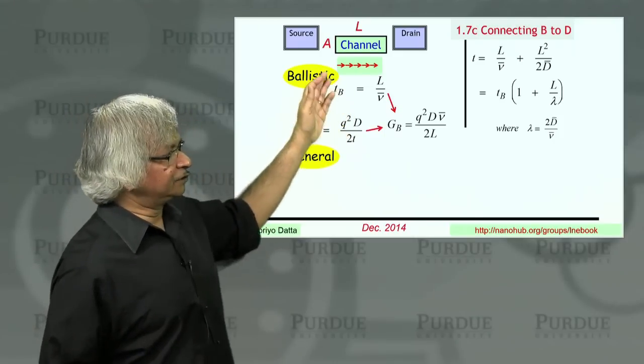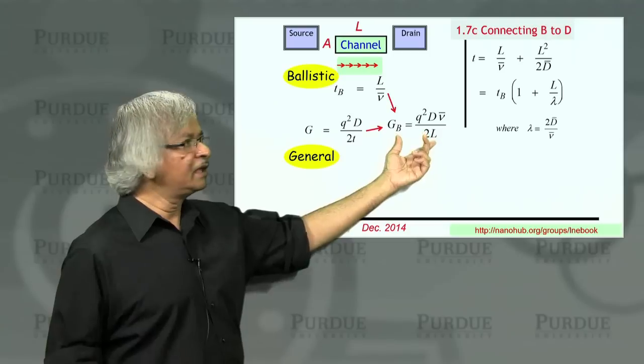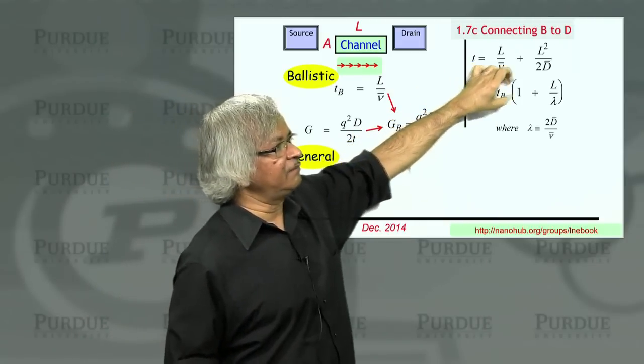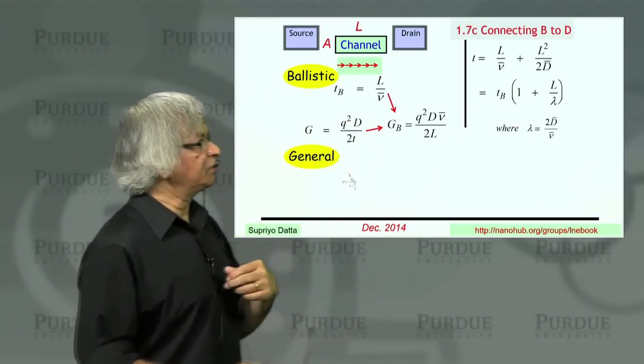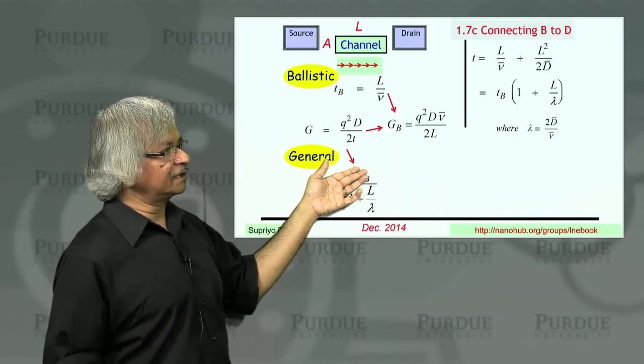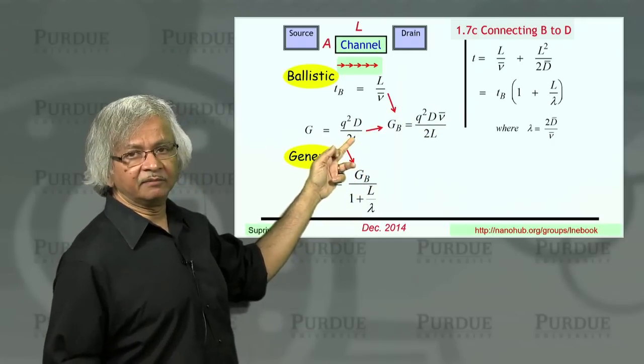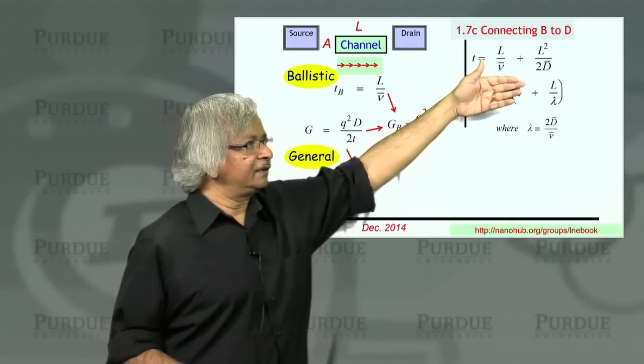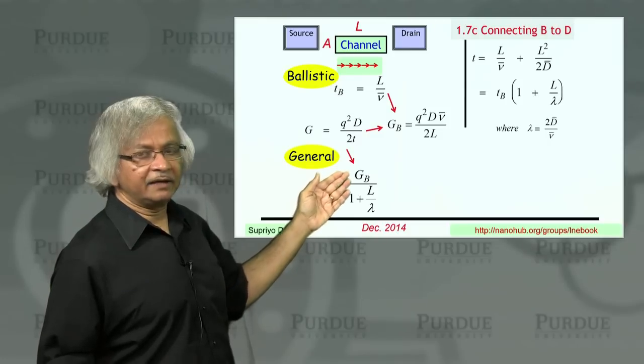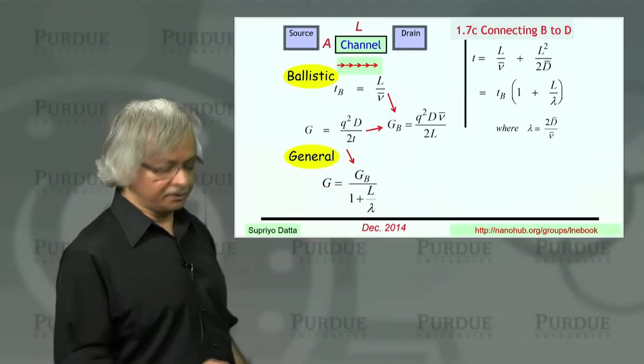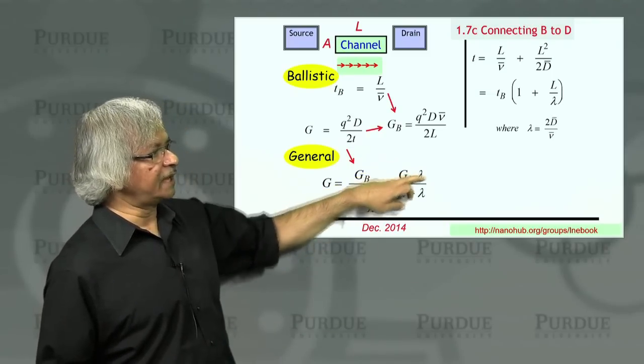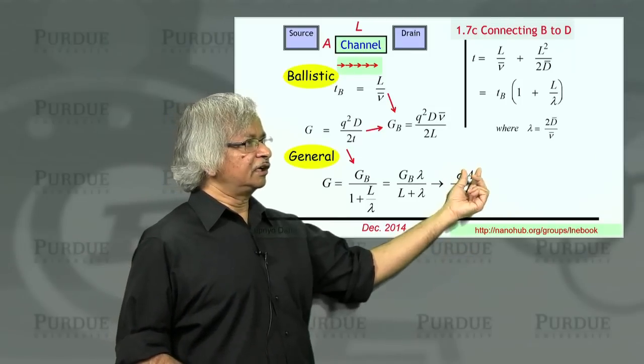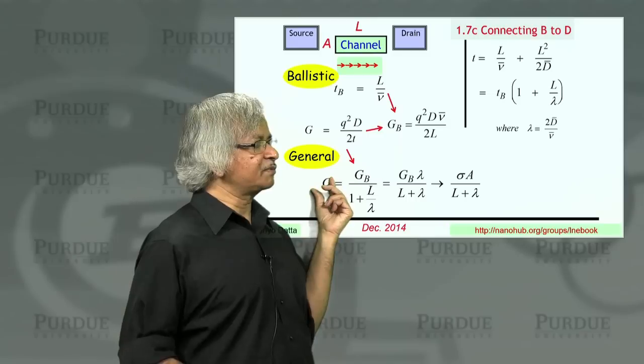So if you now combine that, for ballistic case, we had an expression for ballistic conductance that we obtained before by putting the ballistic time for T. But now let's use this one. The time is ballistic time times that factor. What you'd get then is the conductance would be the ballistic conductance divided by that factor. When I put a ballistic time there, I got this. Now I'll put something a little bigger, the ballistic time times that factor. When I put that in, the conductance I'll get will be less by that same factor. This is the expression you'd get, which you could rearrange to write as GB lambda over L plus lambda. This is something you can then identify with this expression, conductivity times A D over L plus lambda.